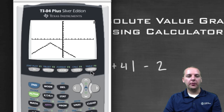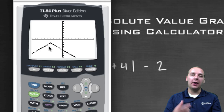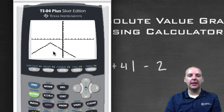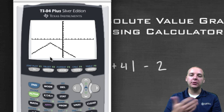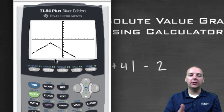We'll go to our graph here — and there it is. This is the graph. Notice it's downward facing because of the negative, that's a reflection downwards. Also notice that it's moved to the left four, and down two — just as we would suspect if we graphed it by hand using translations.